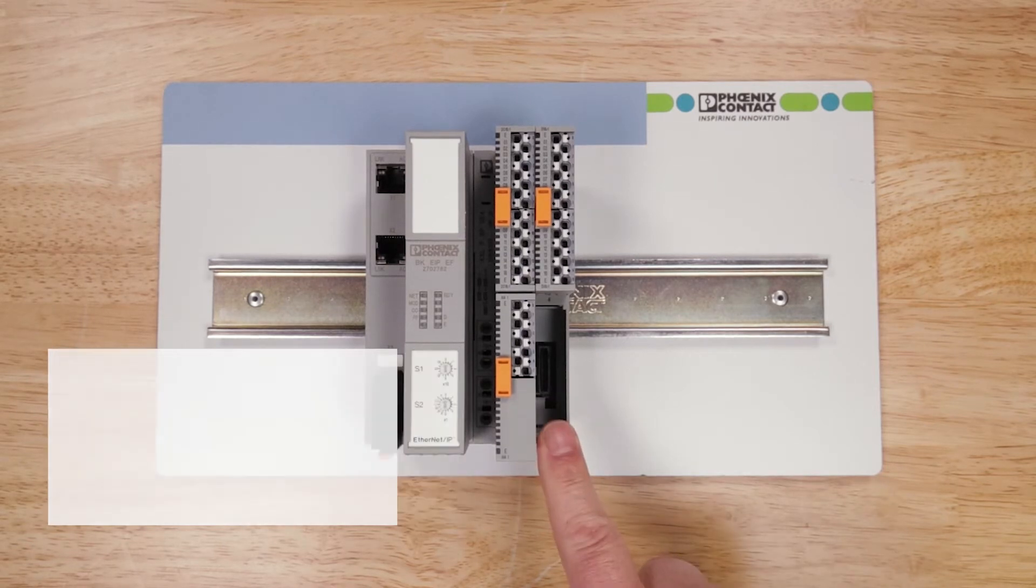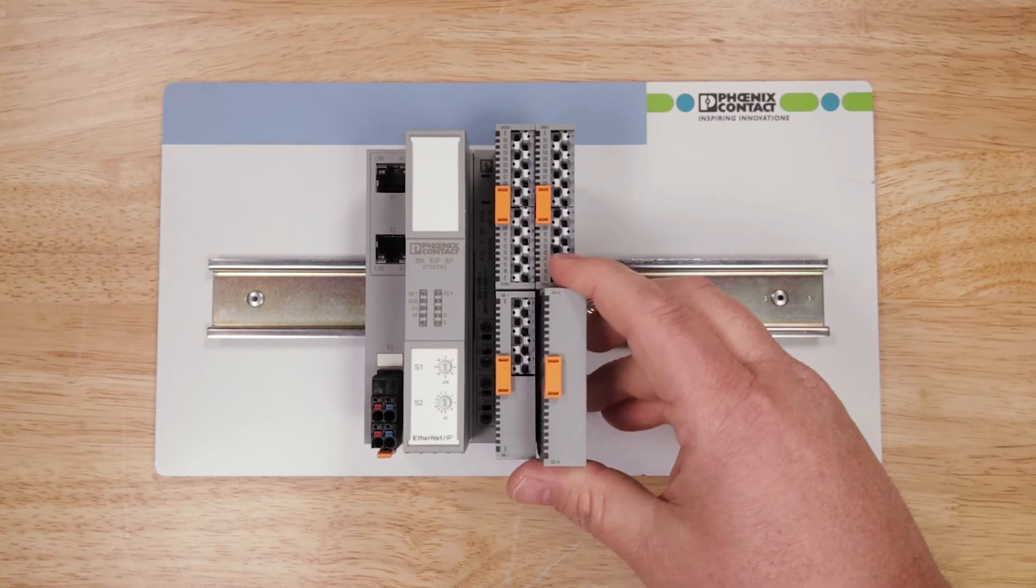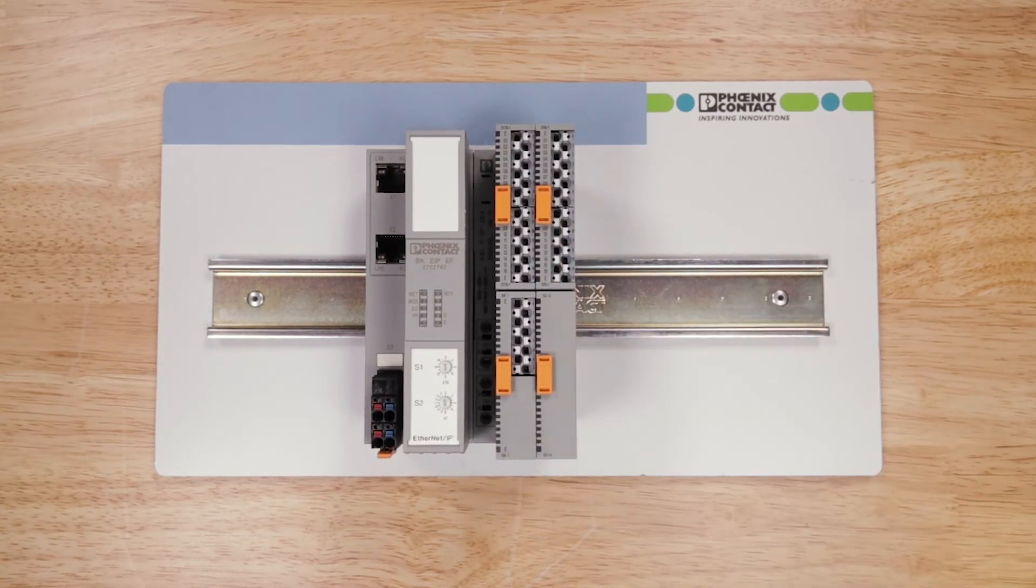For this example, this is all the I/O that I need, but I cannot leave an empty slot, so I have a blank slot cover for the unused spot. And that is a simple Axioline Smart Elements station.